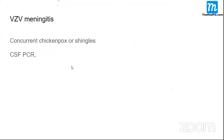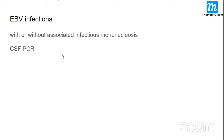Varicella-zoster virus can cause meningitis in chickenpox or shingles. Chickenpox is the acute phase; shingles (herpes zoster) occurs later when dormant virus reactivates in spinal nerves. If patients with shingles develop associated meningeal signs, it is varicella-zoster virus meningitis. Diagnosis is by CSF PCR.